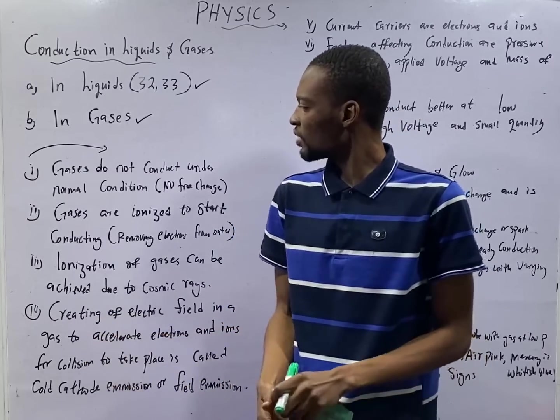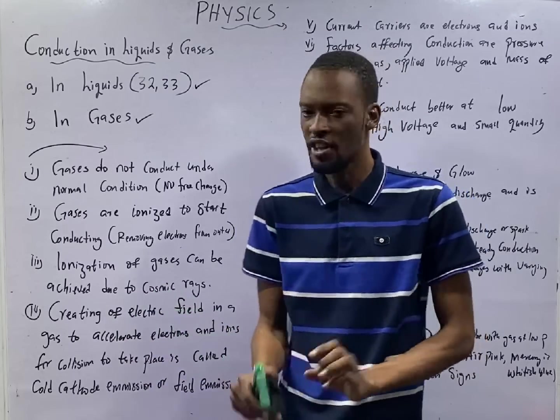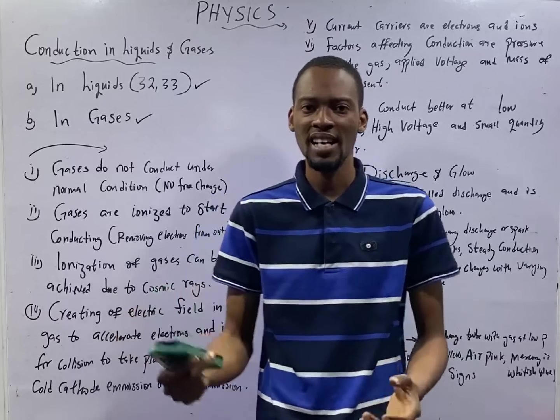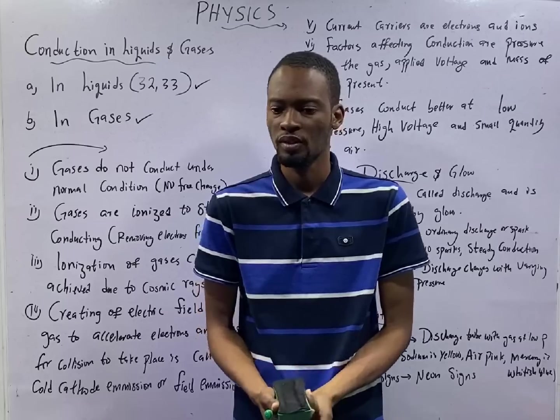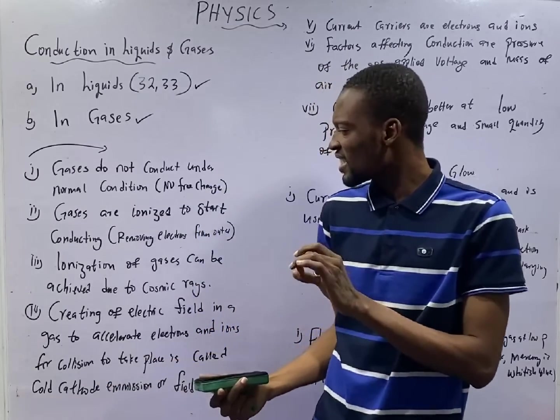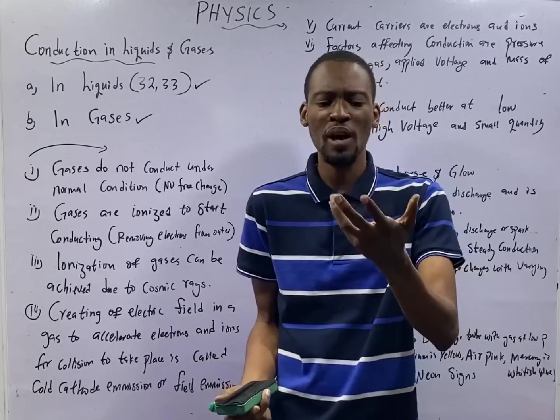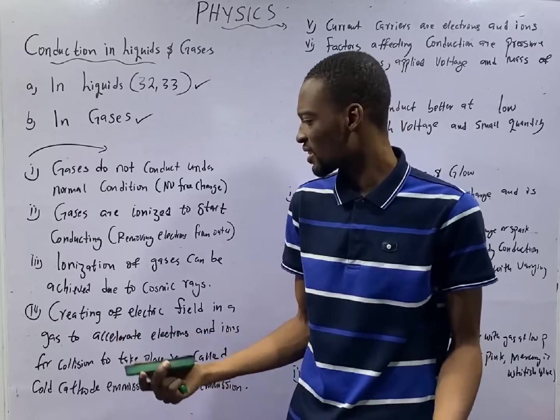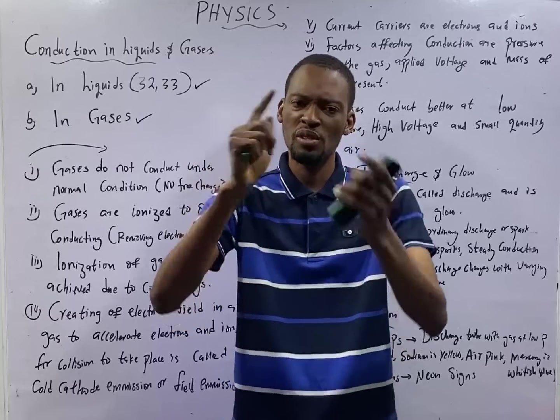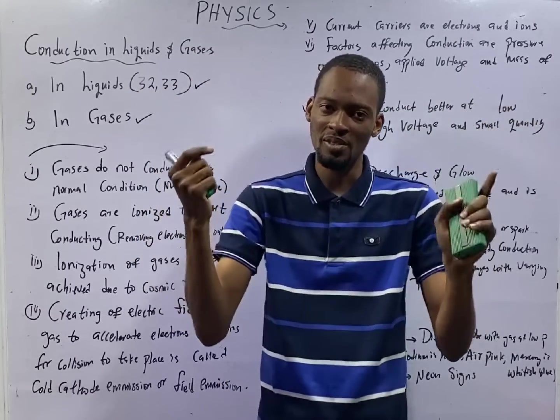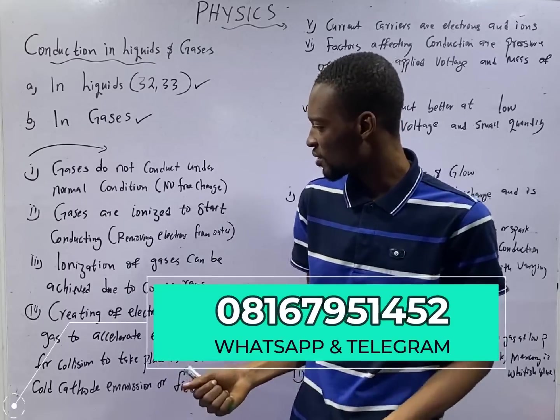Number one: Gases do not conduct under normal condition. This is because there is no free charge. Gases need external factors to make them conduct. Number two: Gases are ionized to start conducting. For a gas to conduct, you need to ionize the gas. What is ionization? Ionizing the gas means removing electrons from its atmosphere so that there will be presence of free electrons. There will not be conduction without the presence of free electrons.